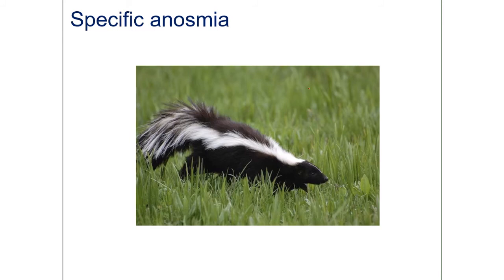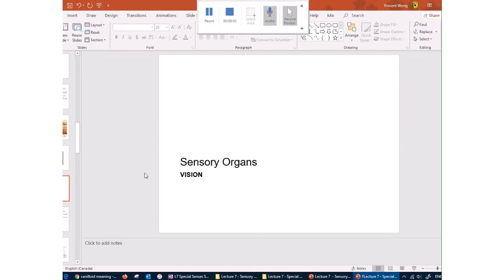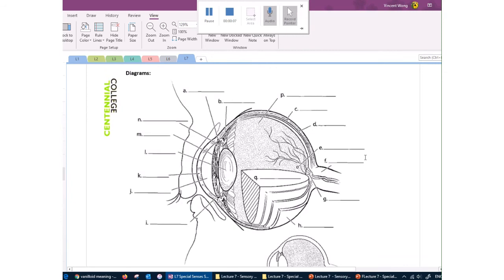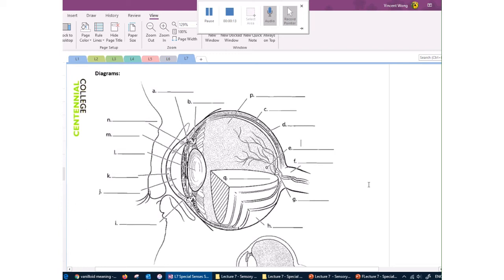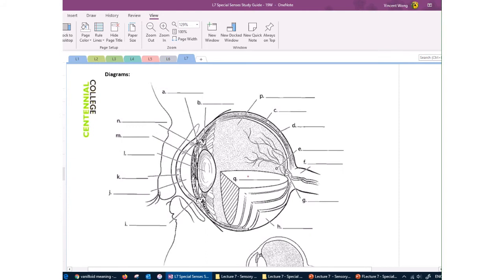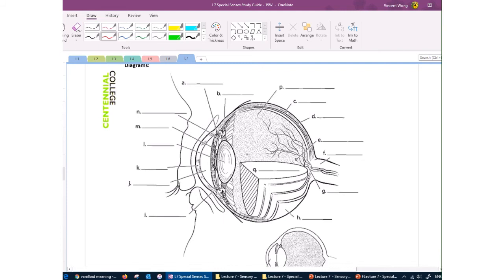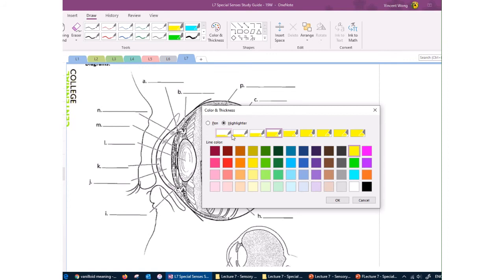Next we're going to look at vision. Let's start by labeling the eyeball diagram in your workbook. The eyeball has three layers. The outermost layer, which makes up the white of the eye, is called the sclera.